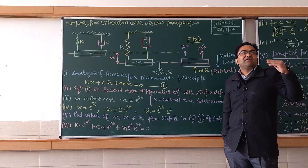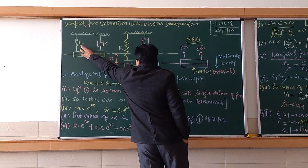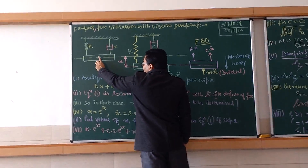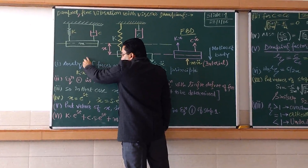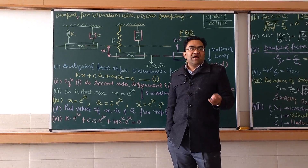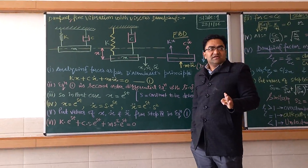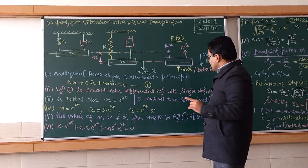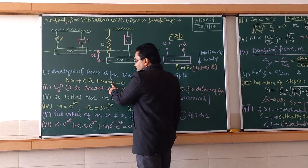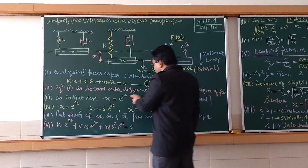This is a single degree of freedom system — there is one mass, one stiffness K, and one spring. The degree of freedom is one. If two masses were attached simultaneously with springs between them, the degree of freedom would be 2, and similarly for 3 or more. Our equation is a second-order differential equation because it contains d²x/dt².